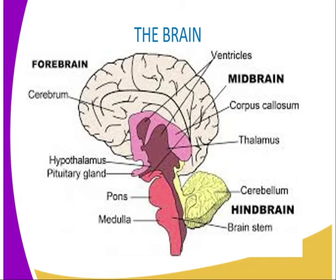Within the brain, there is a system of cavities called the ventricles, which are filled with cerebrospinal fluid, as you can see from our diagram. This fluid is continuous with that of the spinal cord. It is similar to lymph and provides nourishment to brain tissues, and serves as a shock absorber from mechanical damage.